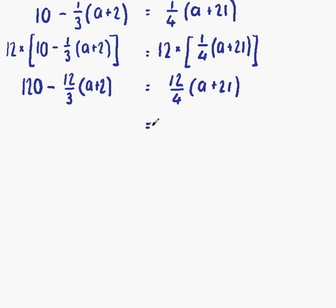If we've done it correctly, at this point, our fractions should simplify and disappear. We have 120 minus, and then we have 12 over 3. That's 12 divided by 3, which gives us 4, brackets a plus 2. And on the right-hand side, 12 over 4, which is 12 divided by 4. That's 3 brackets a plus 21.